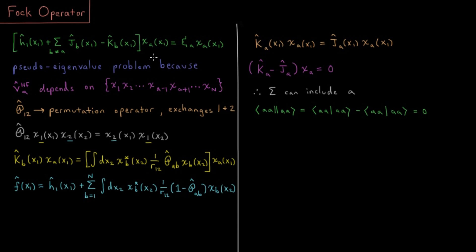This is not actually an eigenvalue problem, but a pseudo-eigenvalue problem, because this Coulomb and exchange potential — our mean field potential — depends on what all of the other spin orbitals are. It depends on electrons one through a-minus-one, a-plus-one, all the way up to n. It depends on every other spin orbital, not just spin orbital a. That's why this is a pseudo-eigenvalue problem, which is non-linear in nature.